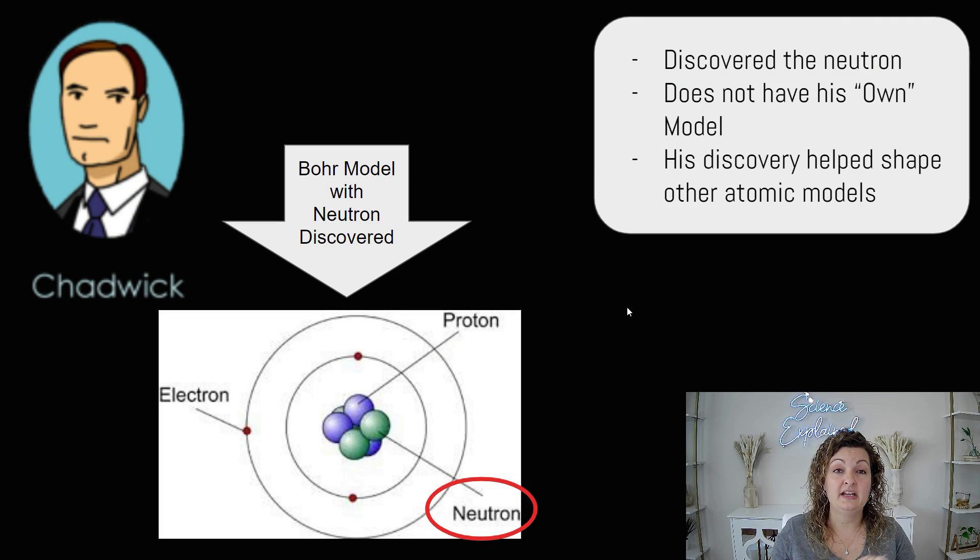So I want to make a side note really quick. Bohr did not discover the neutron. Chadwick, another scientist discovered the neutron. I want to give Chadwick his credit and that's due. So although Chadwick did not have his very own atomic model that we're learning about, Bohr did and Bohr kind of used Chadwick's knowledge of the neutron in the Bohr diagram. So I just want to side note that.